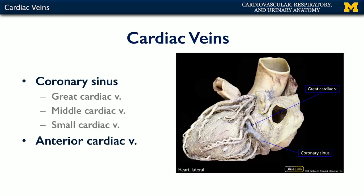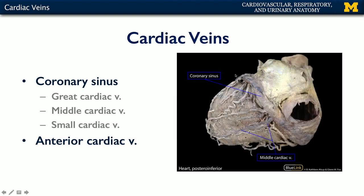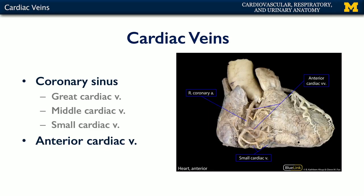Now let's look at this cadaverically. We can see the great cardiac vein coming around in the coronary sulcus to feed into the coronary sinus. Here we have the middle cardiac vein joining the coronary sinus. If we take a right lateral view of the heart, we can see the right marginal branch, and intertwined is the small cardiac vein that meets up with the coronary sinus.